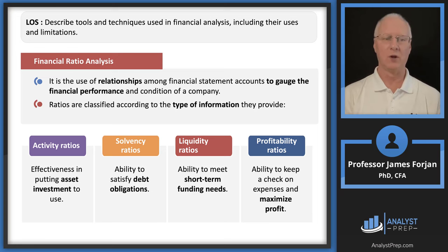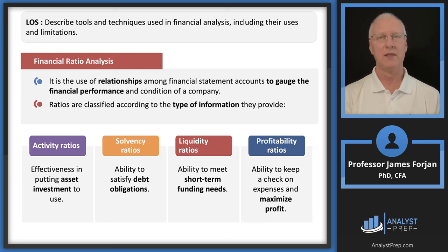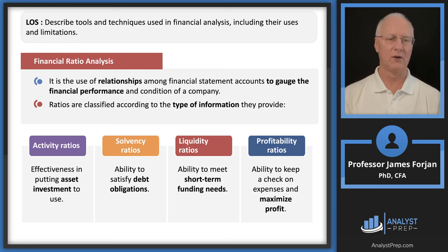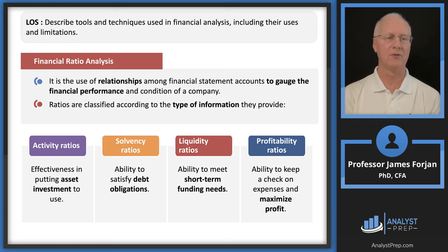Think of activity ratios this way: when computing these, you're essentially evaluating the executive leadership team's effectiveness in finding positive net present value projects. It's one thing to say a product line will have a positive NPV, but it's another thing to do the research and confirm that it turns out to have a positive NPV after two, five, or ten years. Remember: activity ratios measure effectiveness of investing in positive NPV projects.